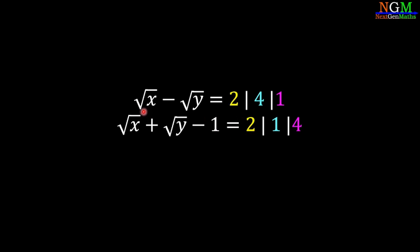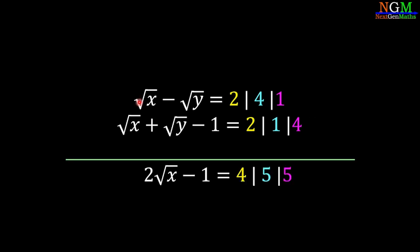For the second case: root x minus root y equals 4 and root x plus root y minus 1 equals 1. For the third case: root x minus root y equals 1 and root x plus root y minus 1 equals 4. Taking the addition between two equations in each case, root x plus root x equals 2 root x, and the root y terms cancel.